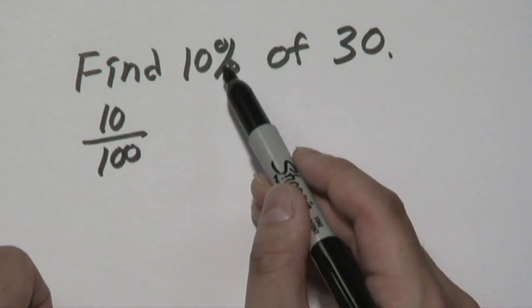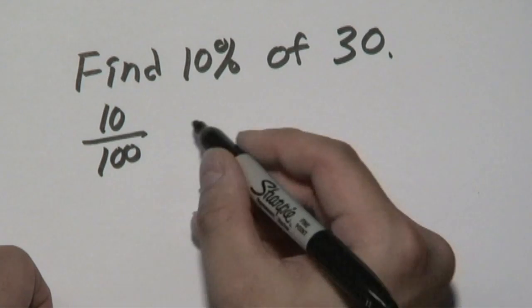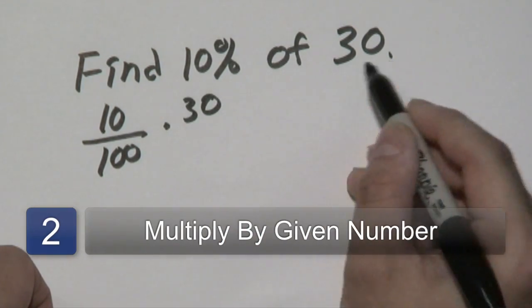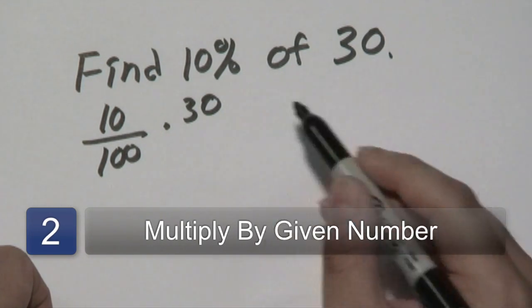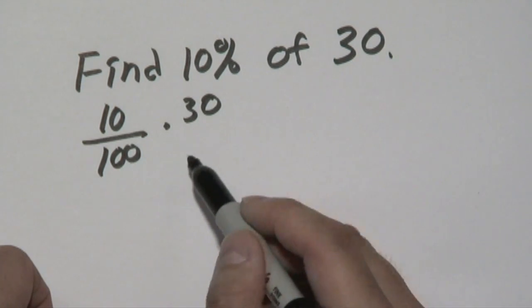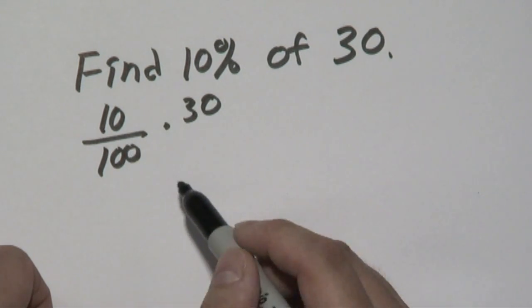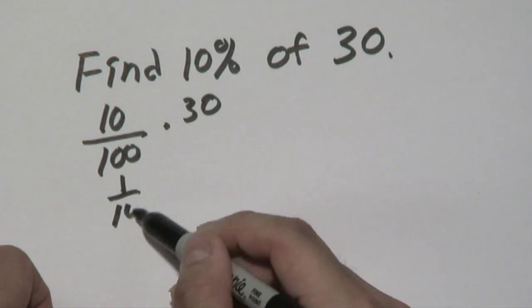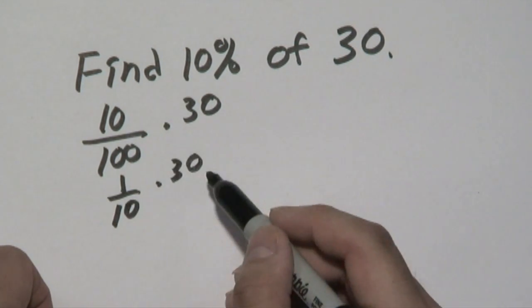So you take 10 over 100. You would take any percent that they give you and divide it over 100, and then you would multiply by the number that's given. Of 30, the number after the of is 30. So you would do 10 over 100 times 30. Now what you can do is reduce the fraction that you have here. 10 over 100 is 1 over 10, and then you can multiply by 30.